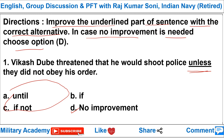Question 1: 'Because Dubai threatened that he would shoot police unless they did not obey his order.' The key here is understanding the meaning of 'unless'. Unless refers to a condition not being met, while 'until' refers to a time threshold not being crossed. For example, you cannot qualify the PFT unless you practice regularly — here 'unless' means 'except if' or 'only if'.